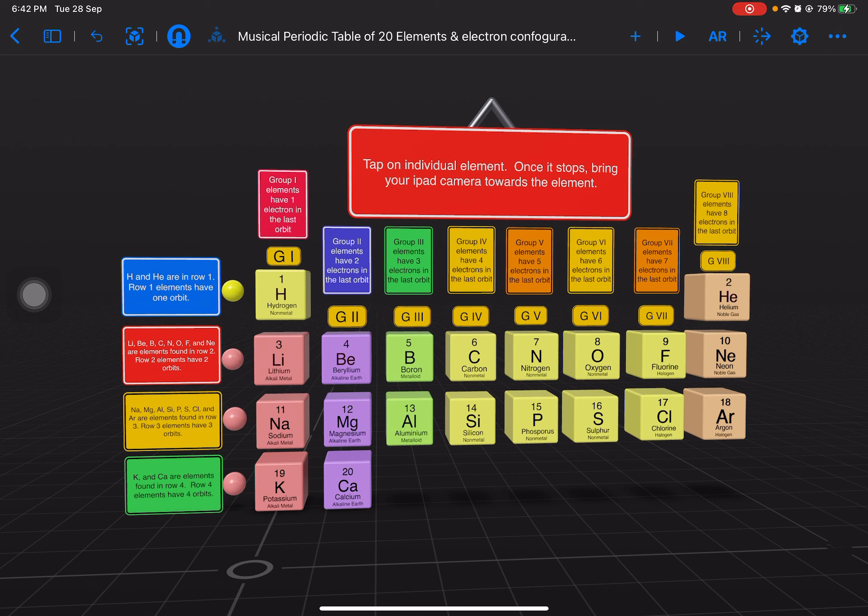The iPad or iPhone camera is then moved forward towards the element and the students can see the electron configuration where the electrons orbit the nucleus. The electrons are not static like the one found in chemistry books, which is rather boring.